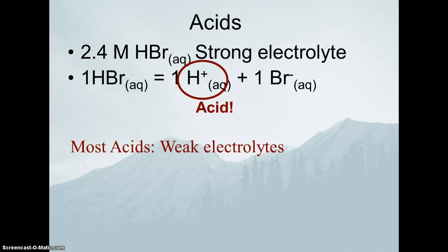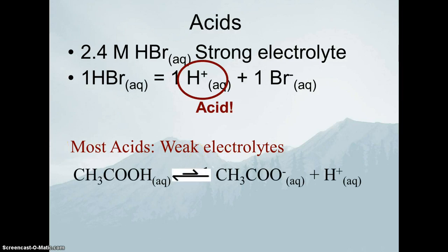Most acids are actually weak electrolytes. We haven't used the phrase 'weak electrolyte' much since we first defined electrolytes — we said there were strong electrolytes, weak electrolytes, and non-electrolytes. When we were talking about precipitation reactions, we said everything was black and white: you either completely dissociated or didn't dissociate at all. Well, the truth is that there are species that are weak electrolytes, somewhere in between.